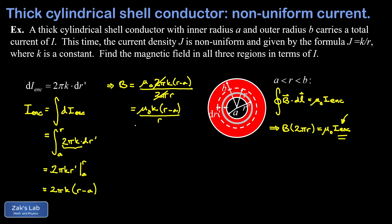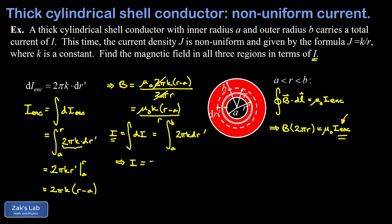We're not done yet, because we want to express the magnetic field in terms of the total current I rather than the constant k. We need to relate k to I. We do the same type of integral as before, but integrating all the way from a to b to capture the entire current. Integrating 2πk dr' from a to b gives I = 2πk(b − a). Solving for k: k = I / [2π(b − a)].